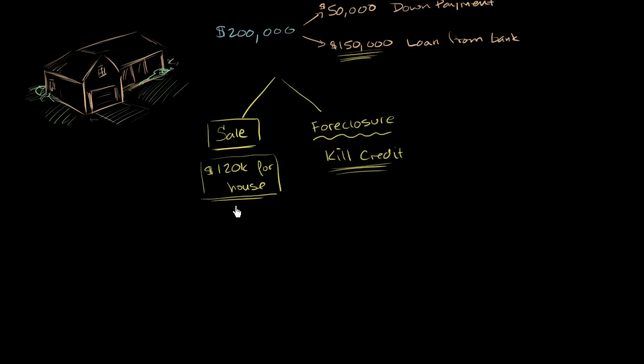So what do you do? You don't want to go to a situation where you sell the house for $120,000, you still owe $150,000 on the loan, and so you're still going to have to pay $30,000 for a house that you don't even have anymore. So what do you do? Well, one option, and this is not always going to be an option, is to go to your bank and say, can I do a short sale?